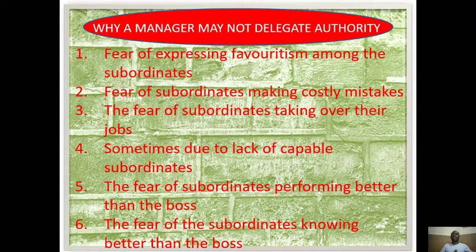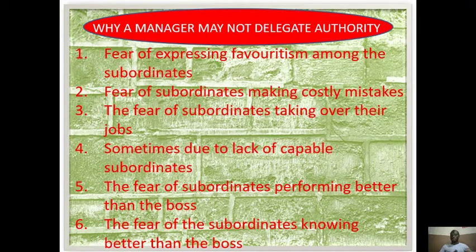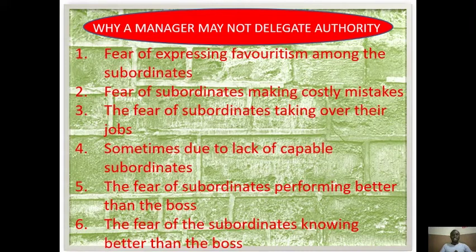Third is the fear of subordinates taking over their jobs — a manager might feel that if he asks the subordinate to carry out a task, and the subordinate has more knowledge than the manager, the subordinate might be favored in the eyes of the boss. Sometimes, due to lack of capable subordinates — such as a new intake who may not be able to handle the task — managers do not delegate responsibilities. Fifth and sixth are the fear of subordinates performing better than the boss and the fear of the subordinates knowing more than the boss. These things may hinder a manager from delegating responsibility.